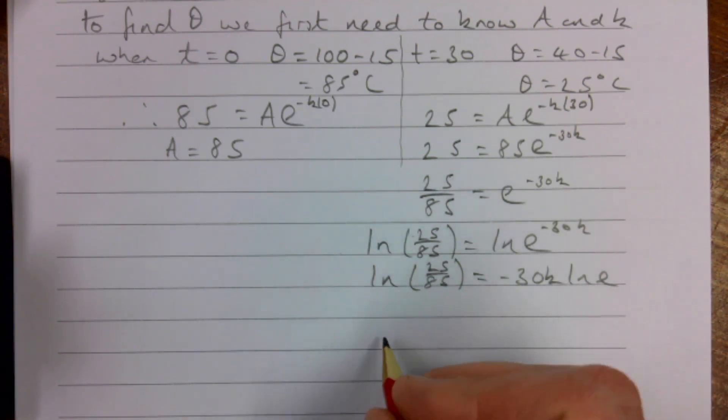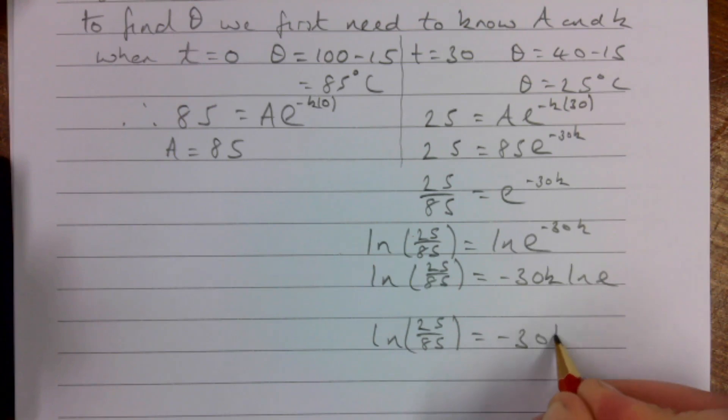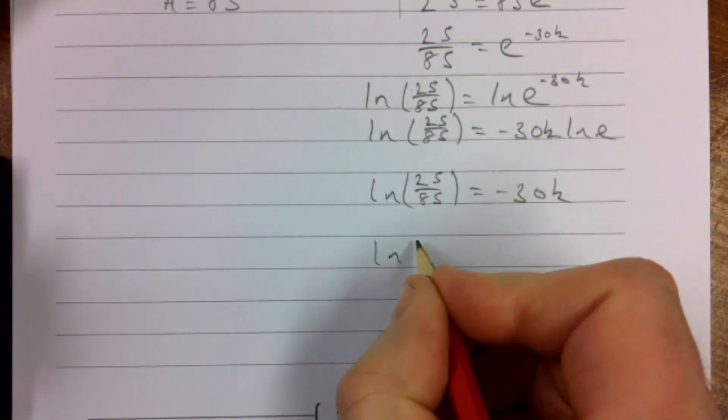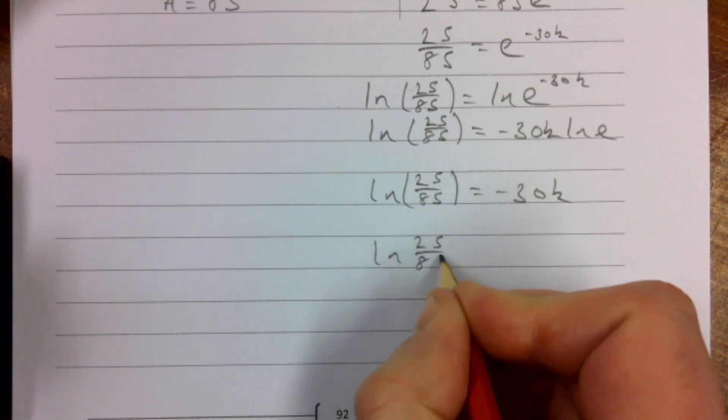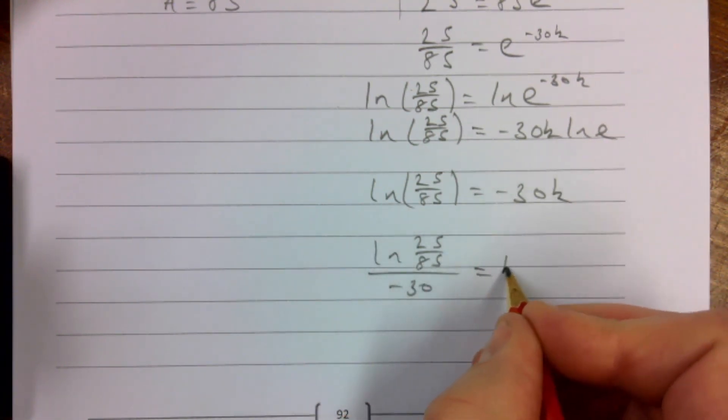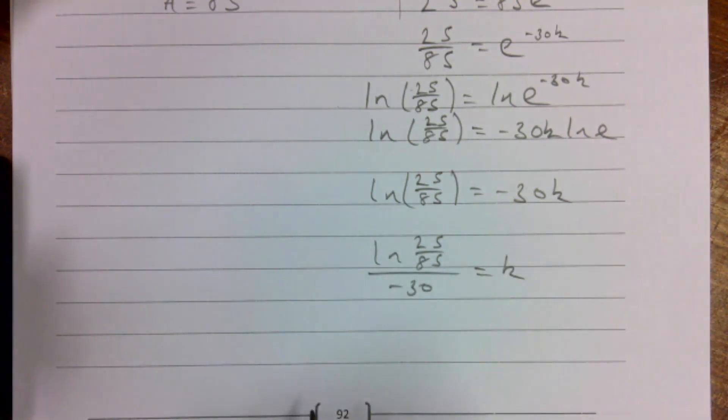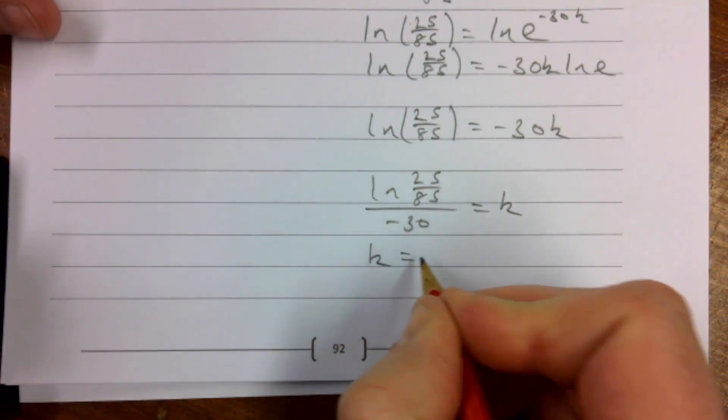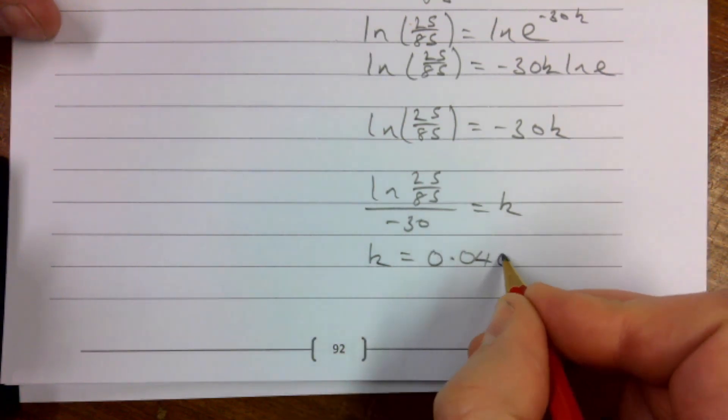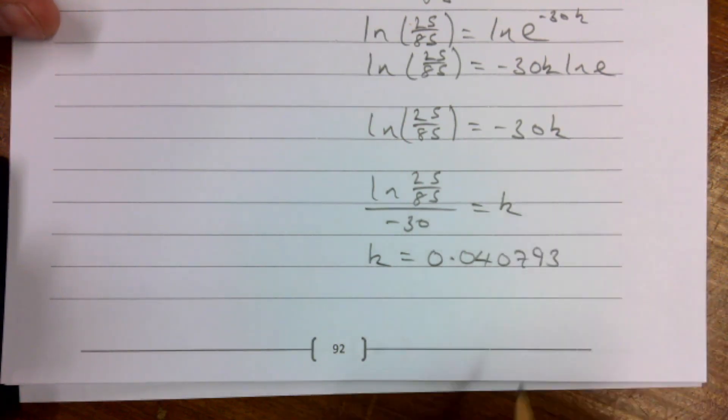That gives me LN(25/85) = -30k·LN(e). LN(e) is of course just 1, so I end up with LN(25/85) = -30k. I'm trying to work out the k. I'm nearly there. So LN(25/85) over -30 is equal to k. Looks a bit messy, put it in your calculator. I get k is 0.040793.